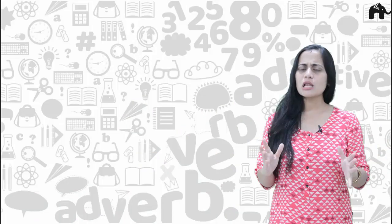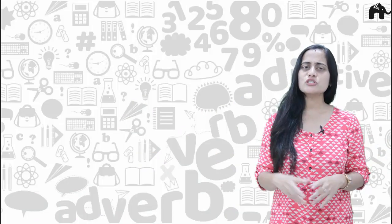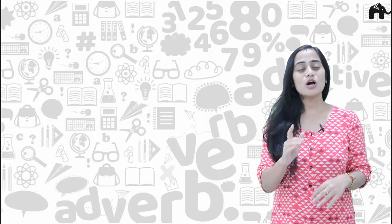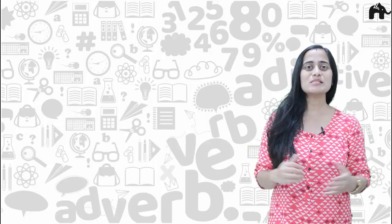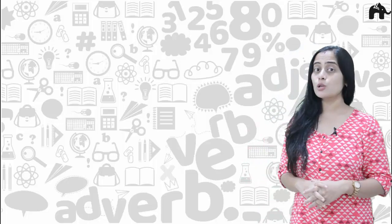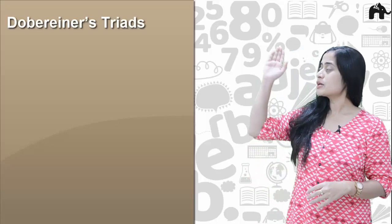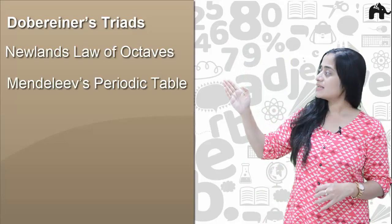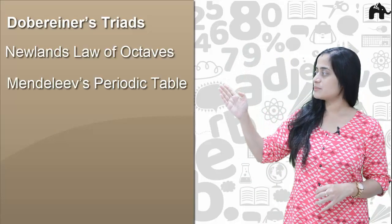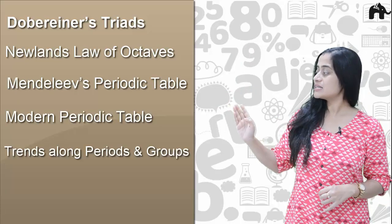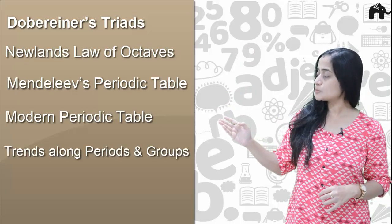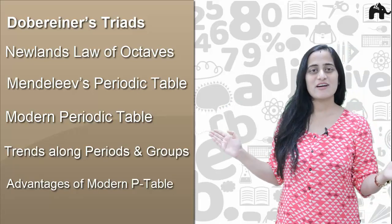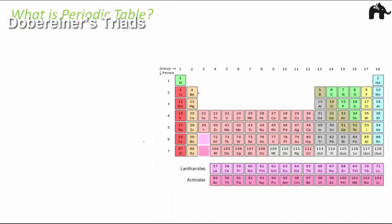In this video, as always, we will focus on the concepts for a clear understanding and also on important topics from an exam perspective. We will cover: Döbereiner's Law of Triads, Newlands' Law of Octaves, Mendeleev's Periodic Table, the Modern Periodic Table, trends along periods and groups in the Modern Periodic Table, and the advantages of the Modern Periodic Table.